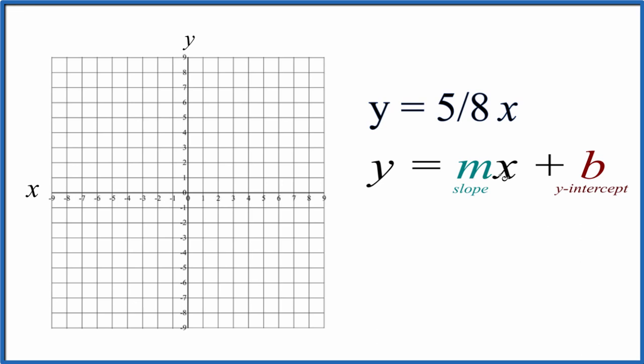So we have y equals mx plus b. b is the y-intercept. We don't have b, so why don't we just say plus zero.